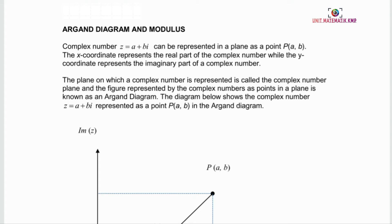Argand diagram and modulus. A complex number Z can be represented in a plane as a point P with coordinates A, B. The X coordinate represents the real part of the complex number, while the Y coordinate represents the imaginary part. The plane on which a complex number is represented is called the complex number plane, and the figure represented by the complex numbers as points in a plane is known as an Argand diagram.